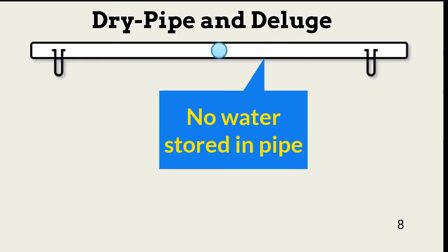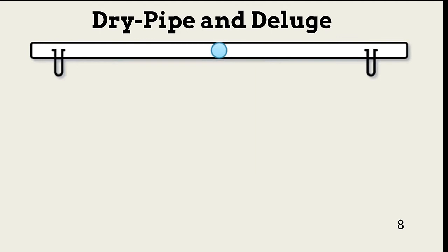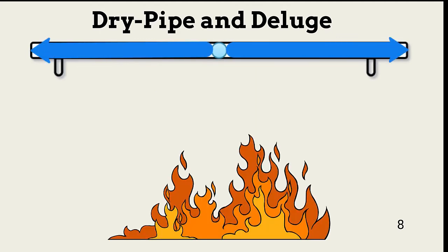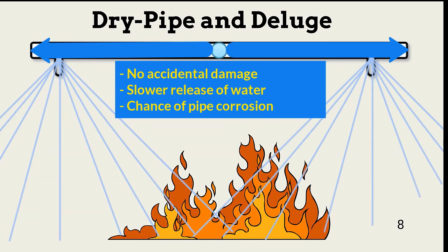Dry pipe systems are similar to wet pipe in design and the delivery of water to fire locations. The primary difference is the lack of water in the pipes feeding the valves until a fire is detected with heat, smoke, or a manual alarm. The advantage is the lack of accidental water release due to condensation or valve failure. The disadvantages include increased time to water release onto the fire, and empty pipes might have an increased chance of corrosion.